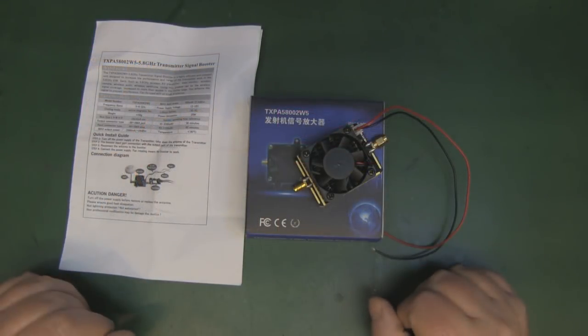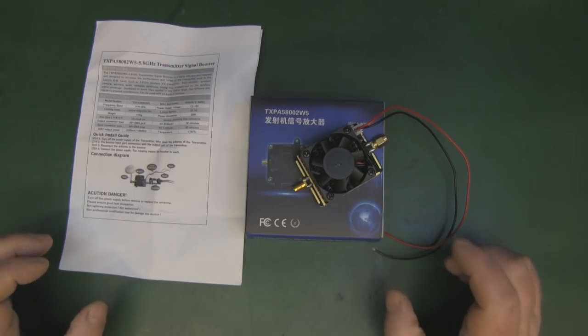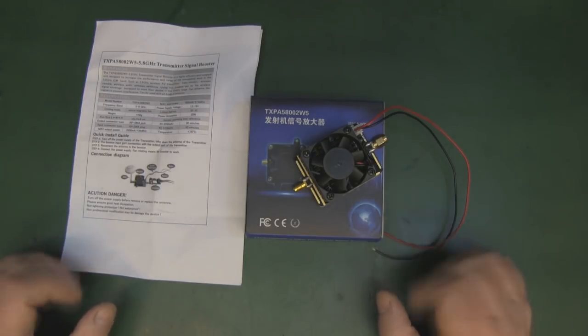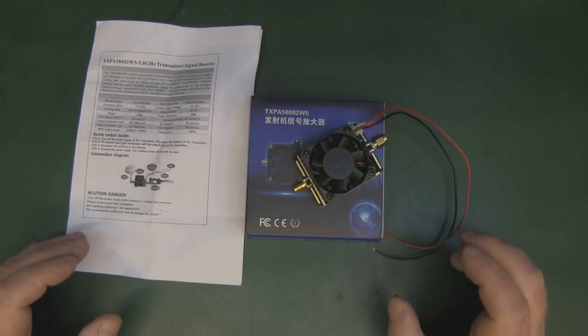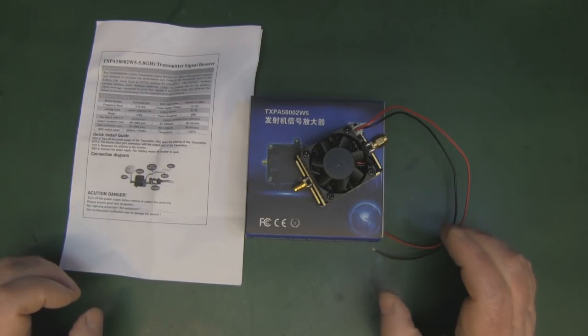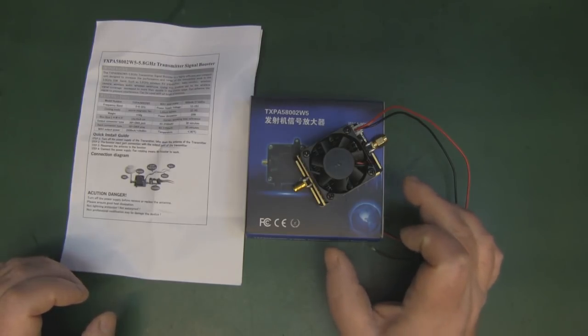We've got something a little bit different to take a look at today, a 4.5 watt amplifier for 5.8 gigahertz. The instructions are vague and don't give much information, but basically it's 4.5 watts. To get the 4.5 watts you need to put 600 milliwatts into this, so you need a 600 milliwatt transmitter.